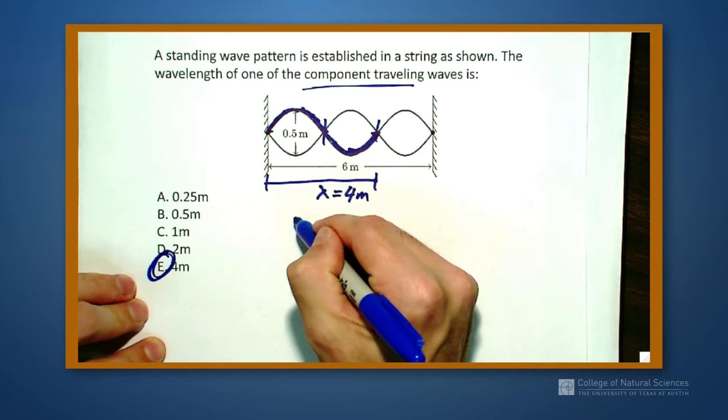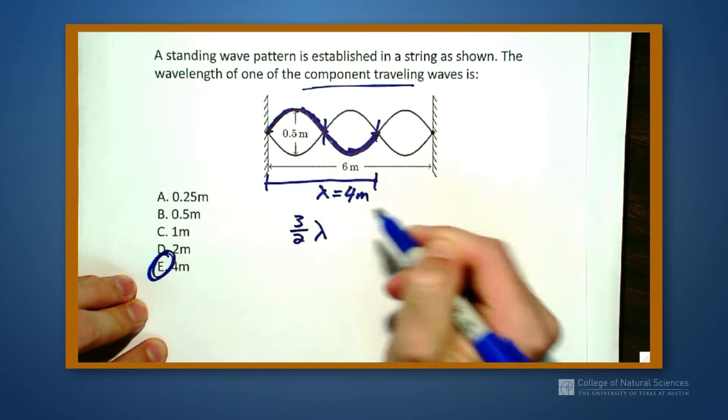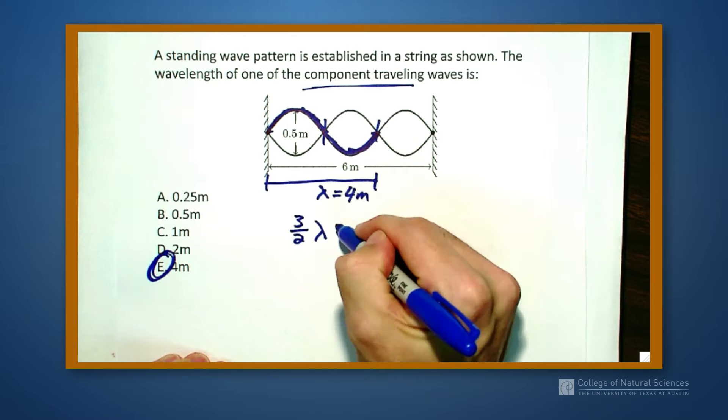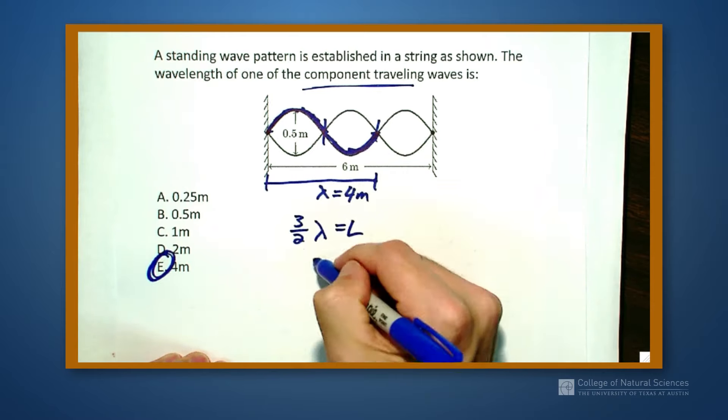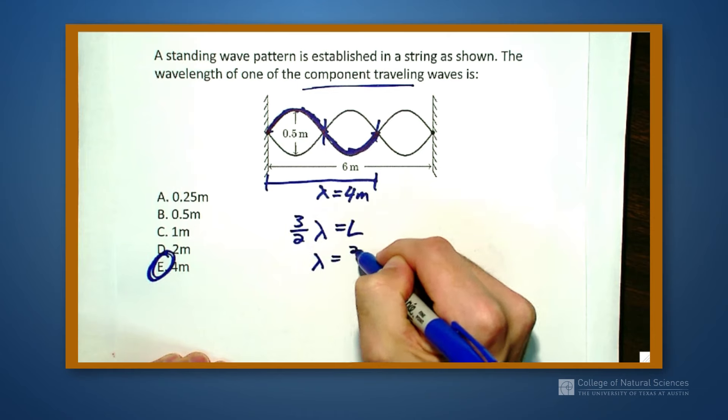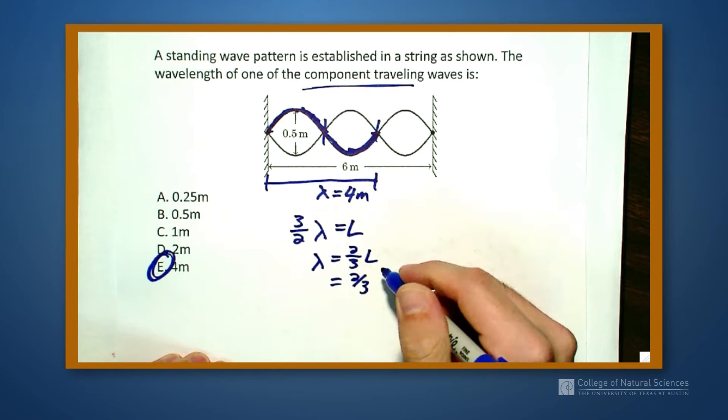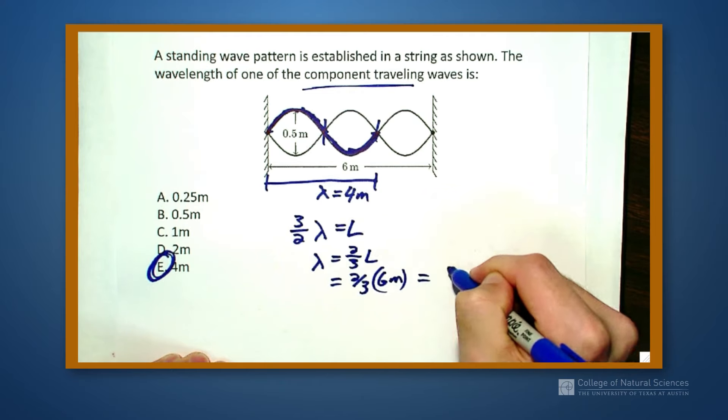and I know that I have three halves of a lambda, or three halves of a wavelength, one, two, three halves, and I know that that distance equals L. So wavelength is equal to two-thirds L, which is two-thirds times six meters, which happens to also be four meters.